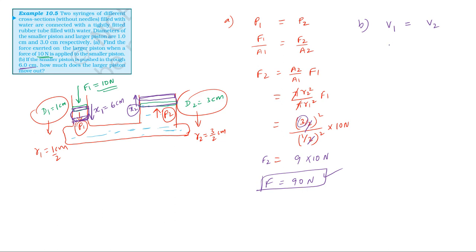Volume equals area of cross-section multiplied by distance moved by the piston. So A1 into x1 equals A2 into x2, which gives pi R1 squared into x1 equals pi R2 squared into x2.